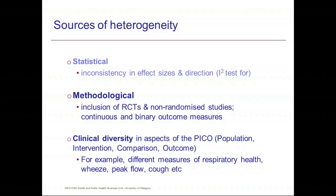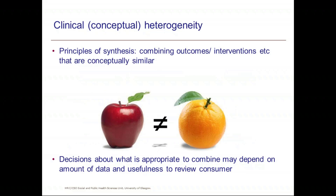Clinical heterogeneity refers to variation in aspects of the PICO — population, intervention, comparison, and outcome. For example, there might be different measures of respiratory health reported, like wheeze, peak flow, and cough. Very often people say you can't combine two things that are not the same — you can't combine apples and oranges — because synthesis is about combining things that are similar. But this is really a matter of perspective. Your decision depends a lot on how much data you have, how similar the outcomes are, and what will be useful to the review consumer.